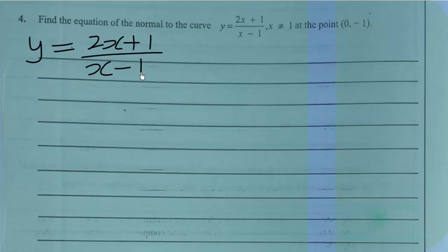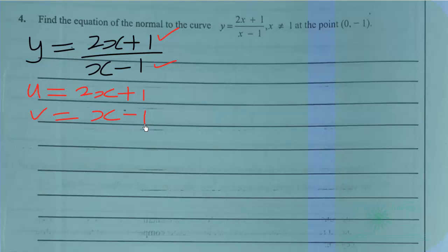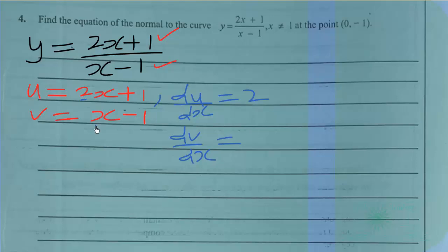We are going to use the quotient rule. We let u = 2x+1 and v = x-1. Differentiating, du/dx = 2 and dv/dx = 1.